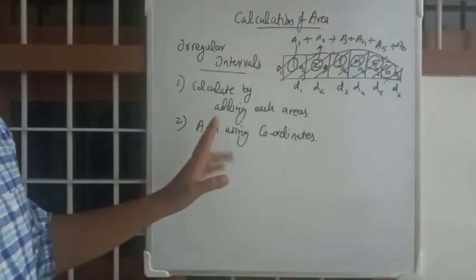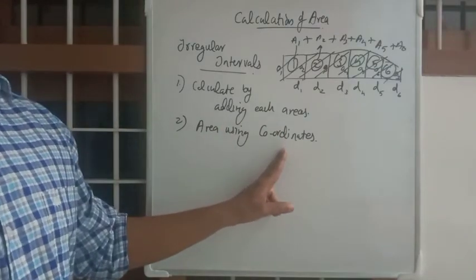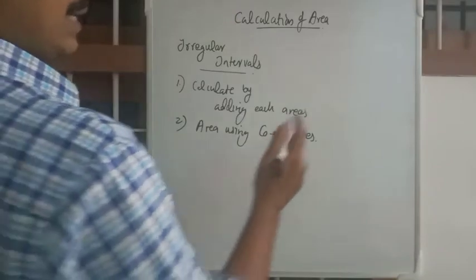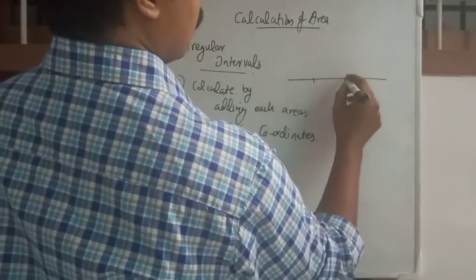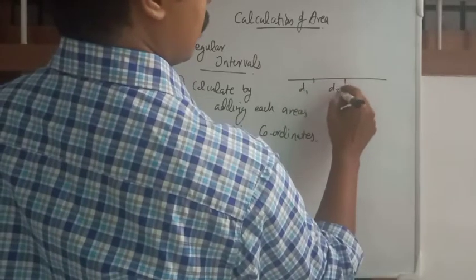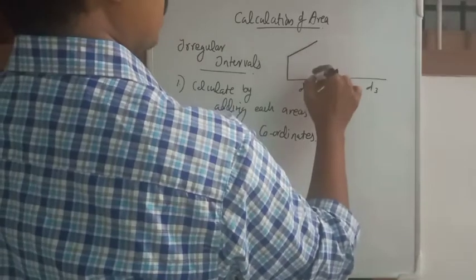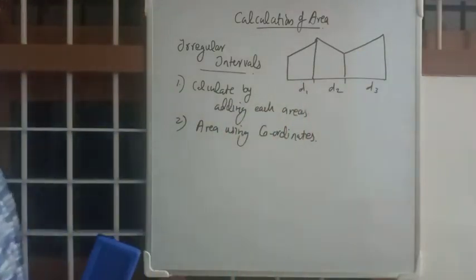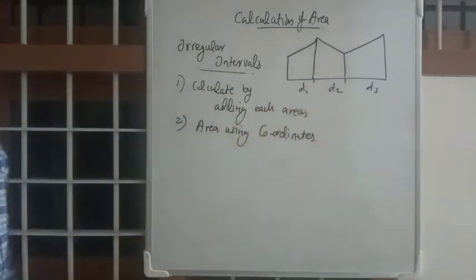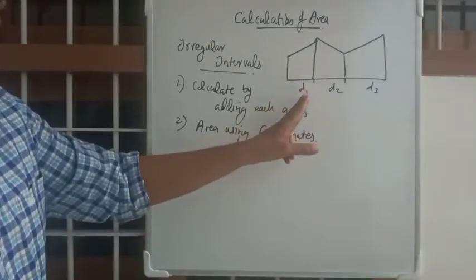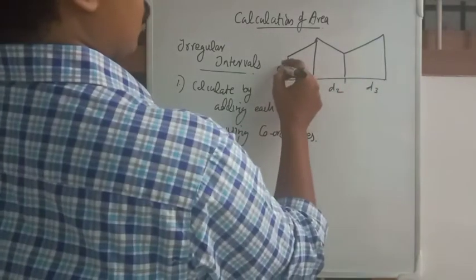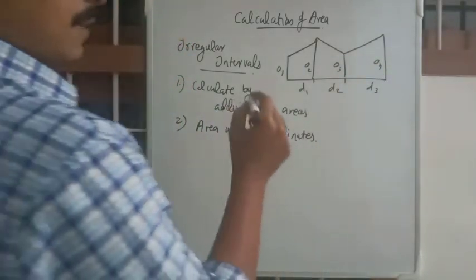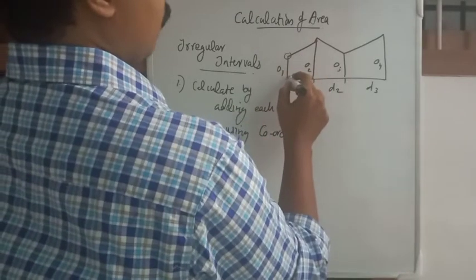The second and main method is area calculation using coordinates. This is the important point here. We use the same type of diagram, but instead of only offsets from one side, offsets may appear on both sides. Suppose this is the baseline with three sections and intervals D1, D2, D3, with offsets O1, O2, O3, O4.